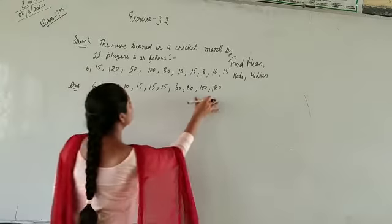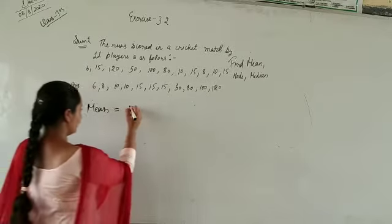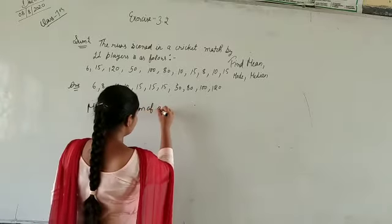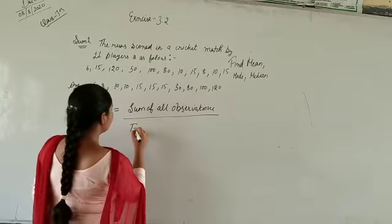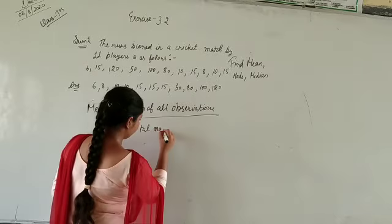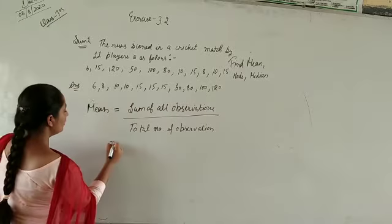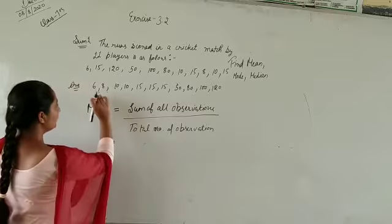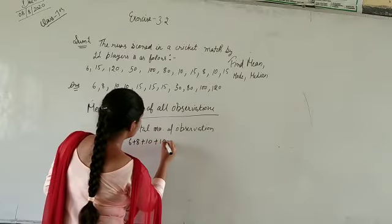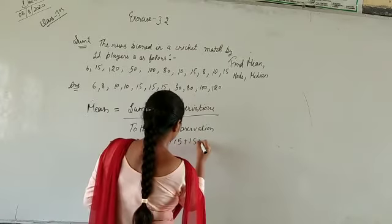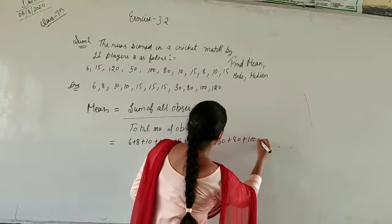We will arrange in ascending order. So the mean is the formula: sum of all observations divided by total number of observations. This is 6 plus 8 plus 10 plus 15 times 2 plus 50 plus 80 plus 100 plus 120.